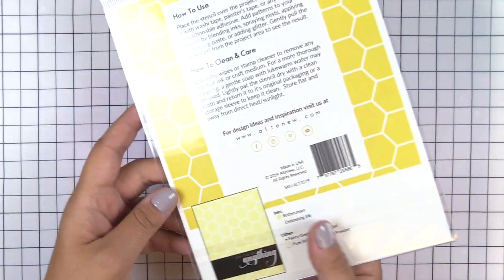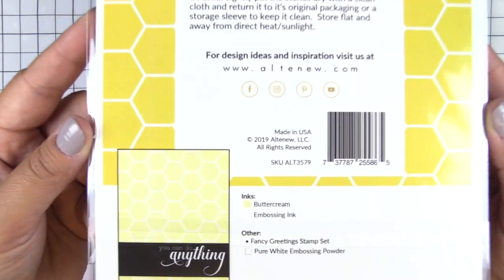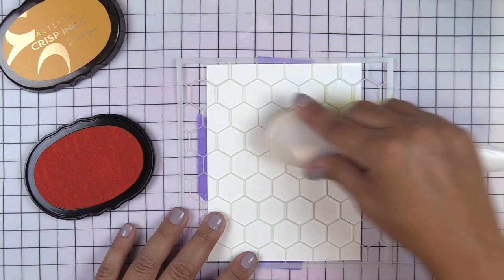This is Honeycomb Stencil from Altenew. This stencil measures six by six, perfect for any A2 size cards.